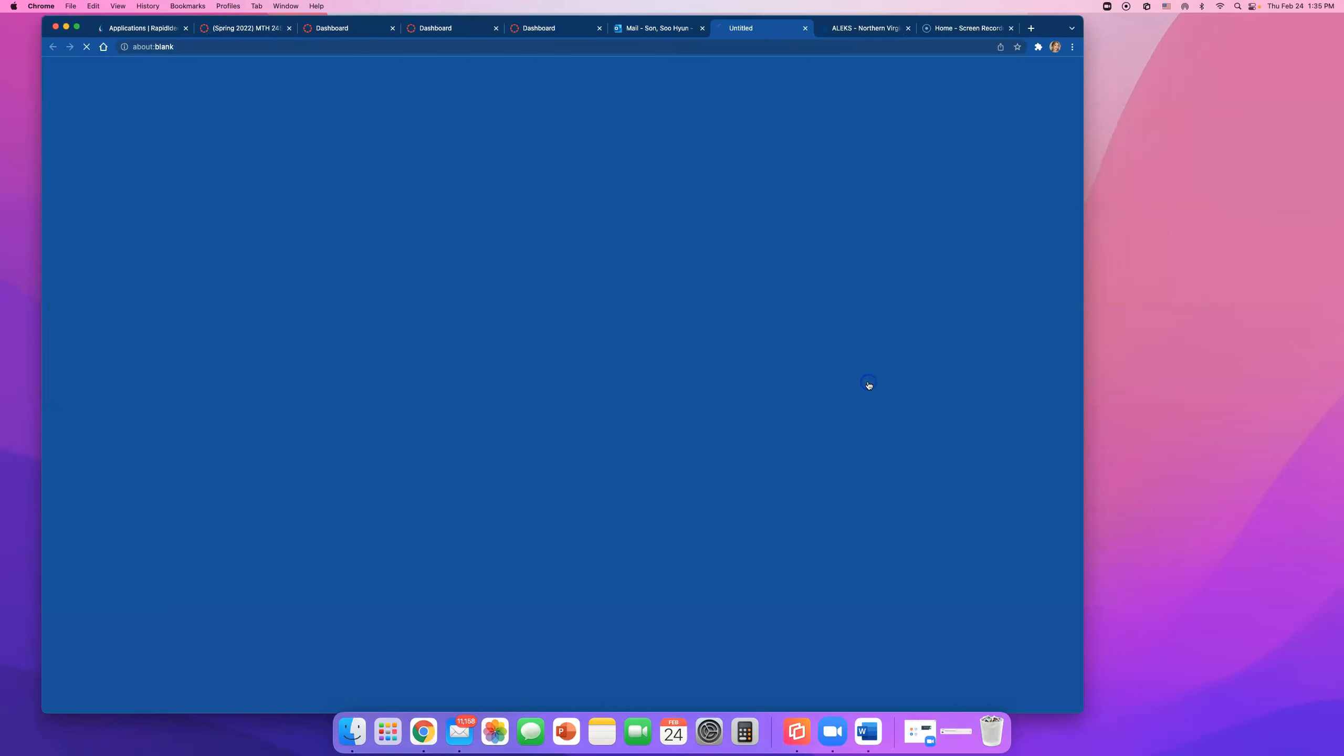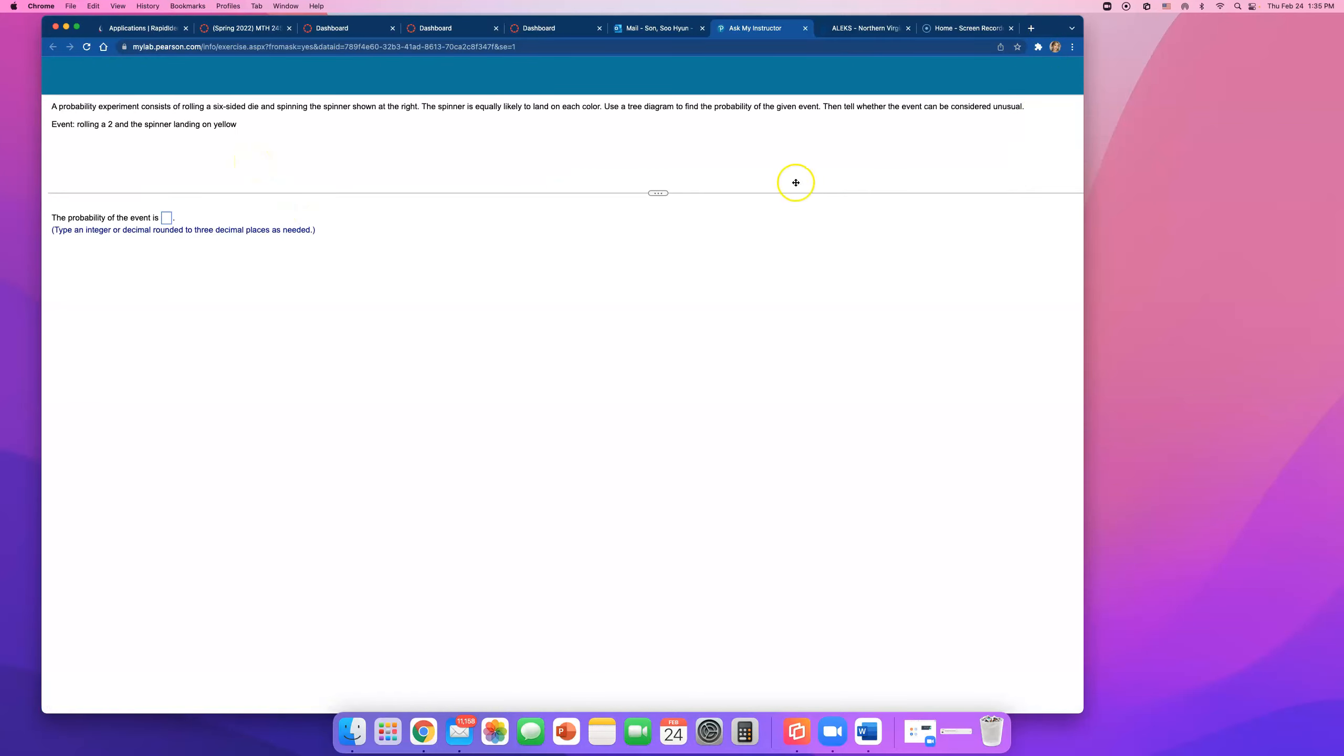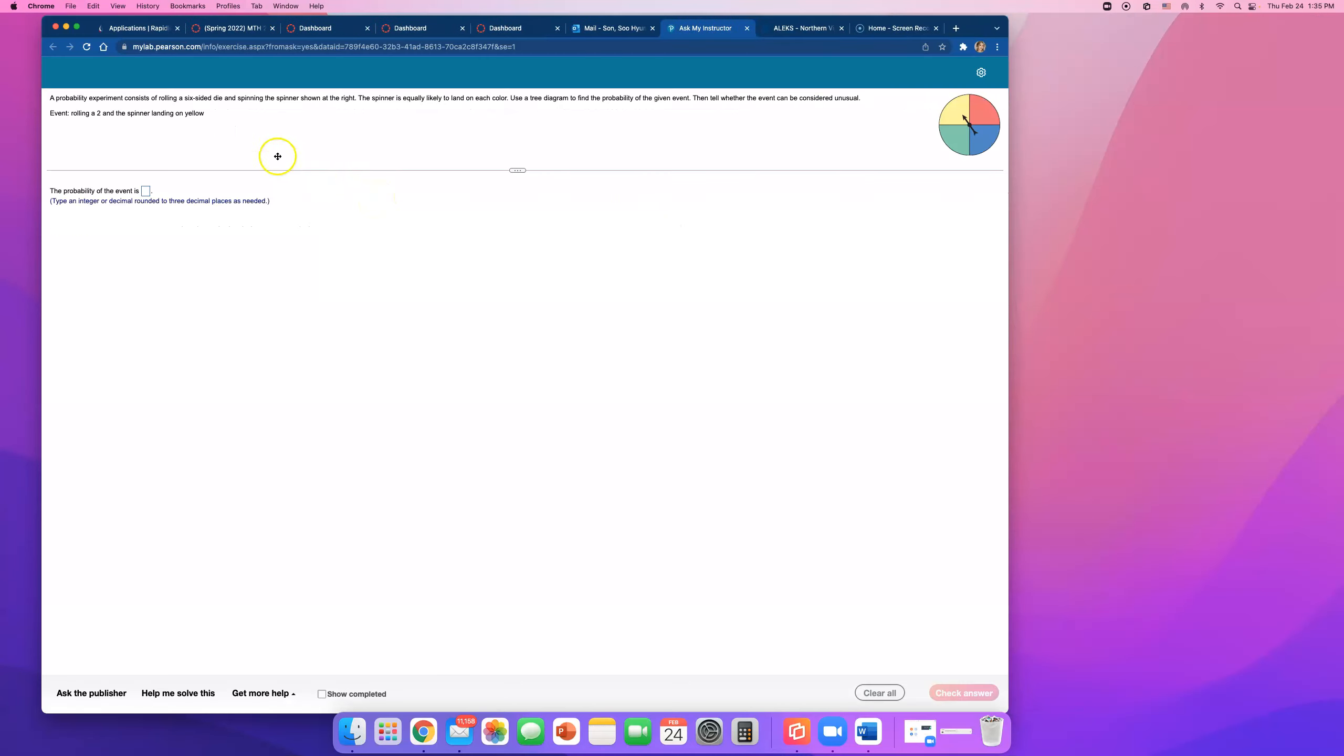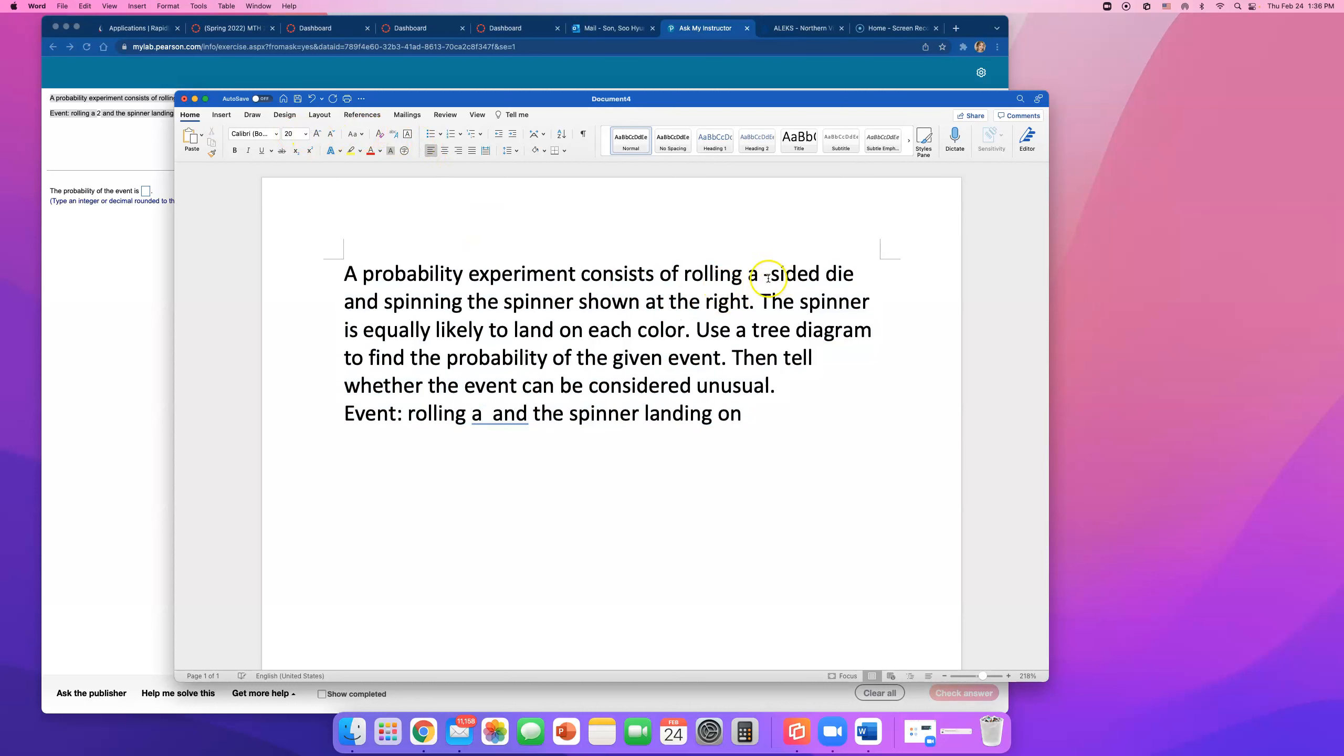We're looking at Math 245 Statistics homework question. This says the probability experiment consists of... I wonder if I can zoom in more, maybe not. Give me one second, this is so small. We'll go ahead and copy this and I'm gonna go ahead and just make it a little bit bigger on the Word document because it was so small. All right, so the question is: a probability experiment consists of rolling a six-sided die and spinning the spinner shown at the right.